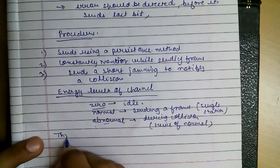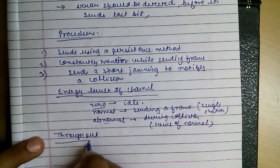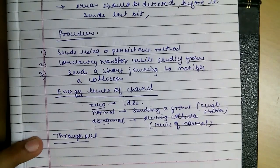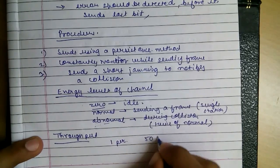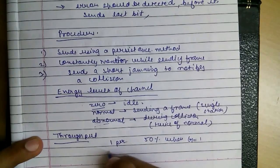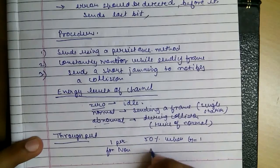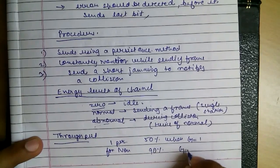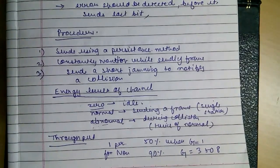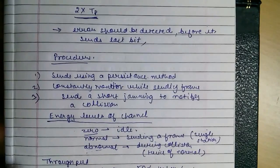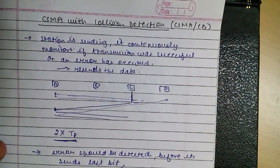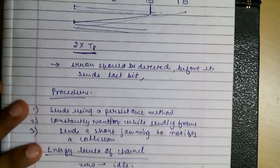The throughput of this protocol is: for the 1-persistent method it will be 50% when G equals 1, and for the non-persistent method it is 90% when G varies from 3 to 8. The throughput is much better than that of Aloha and Slotted Aloha. So this is CSMA with Collision Detection. The next one will be CSMA with Collision Avoidance — see you next time.